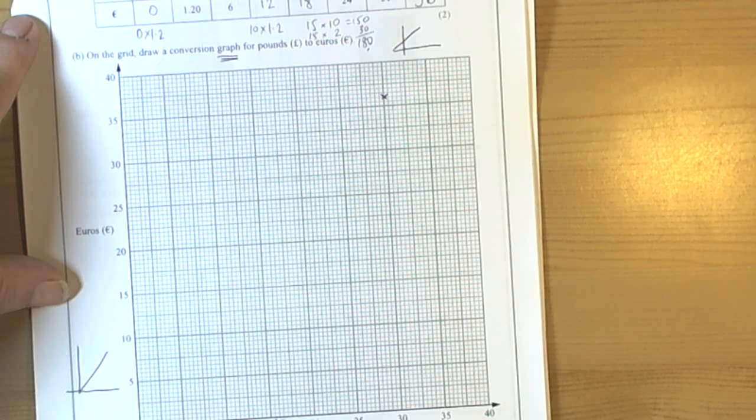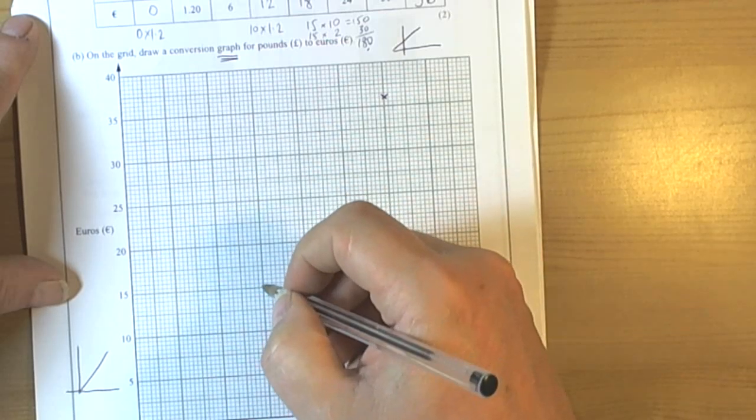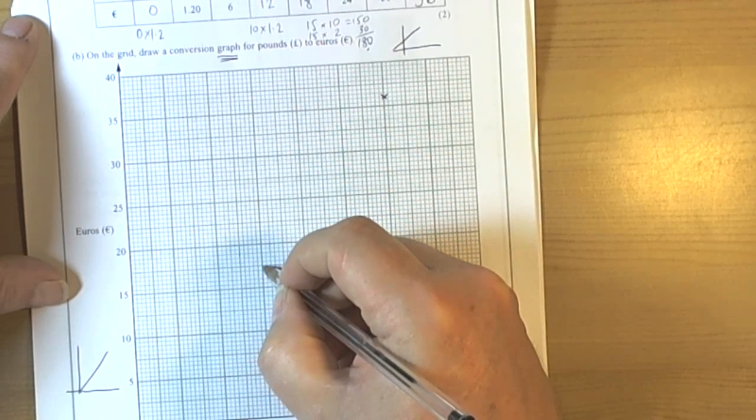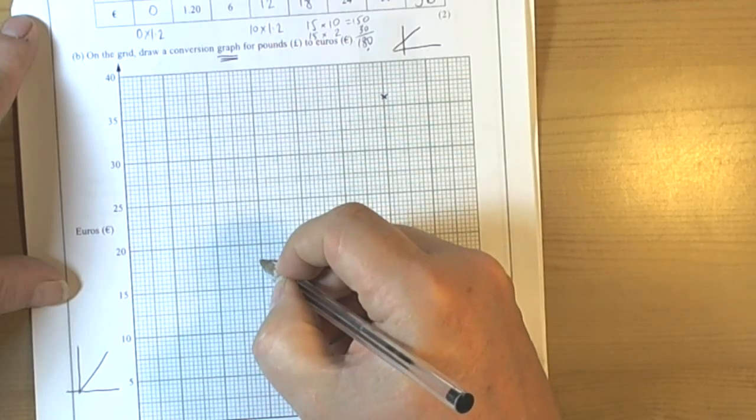We ought to put a third point on, just to make sure our ruler lines up carefully and make sure we have plotted carefully. So I'm going to choose 15 went to 18. So 15, half, 16, 16 and a half, 17 and a half, 18.